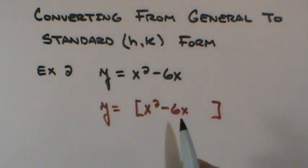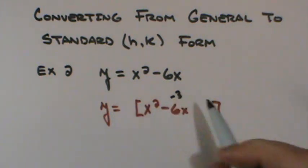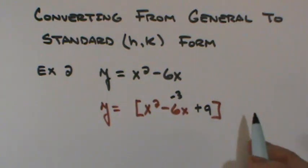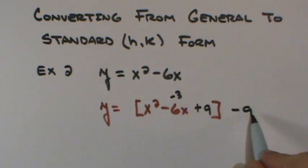So when I look at this, I go to my second term, I cut that in half, which would be negative 3, and I square it. So I square negative 3, I get positive 9. With a positive 9, I can't just randomly go about adding 9 to problems. I must balance by subtracting 9.